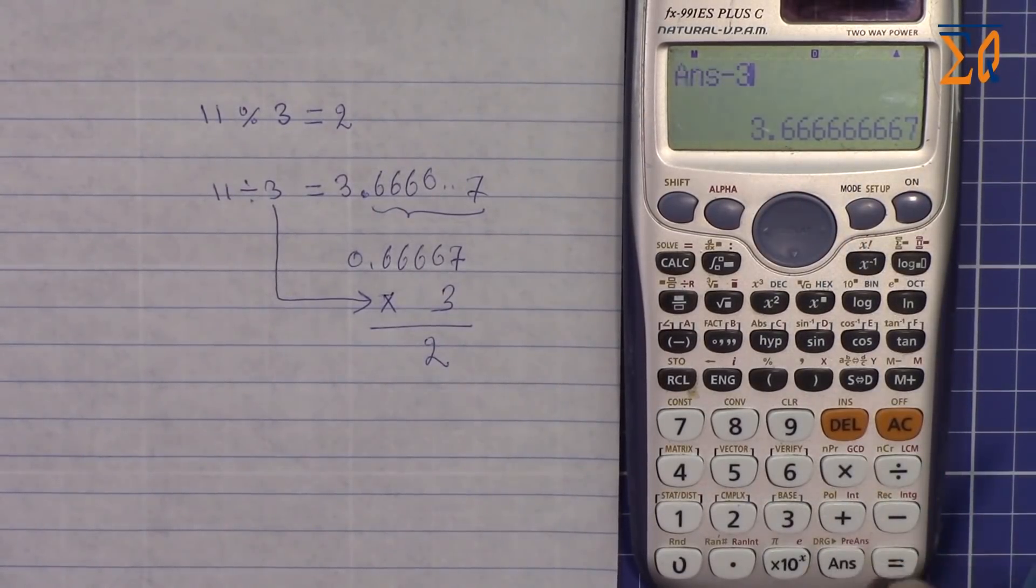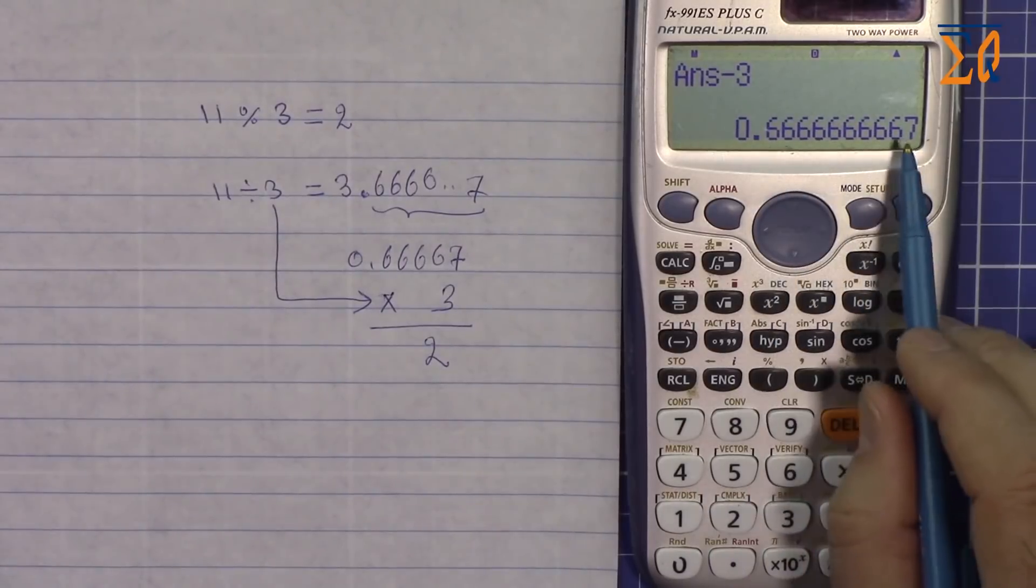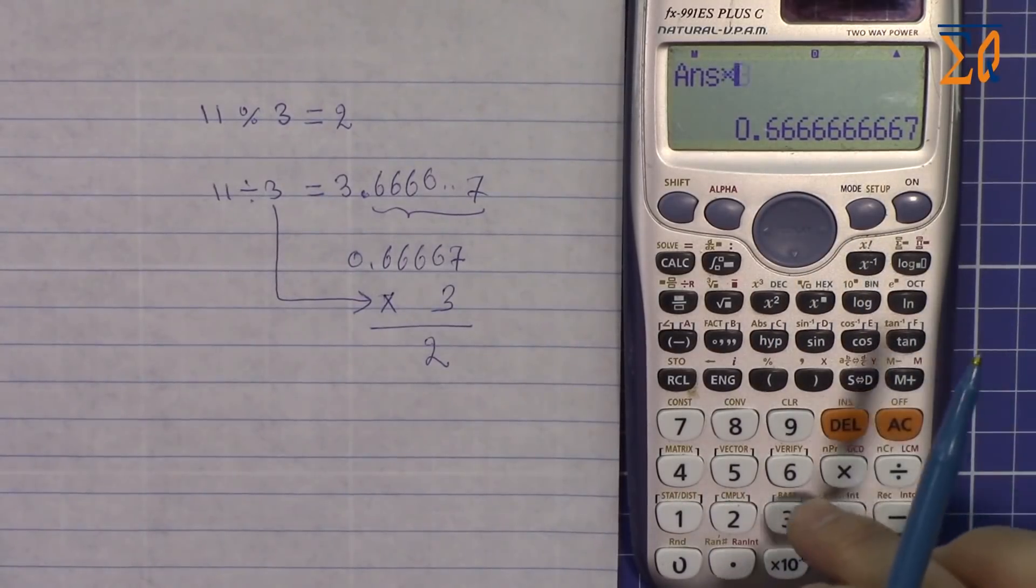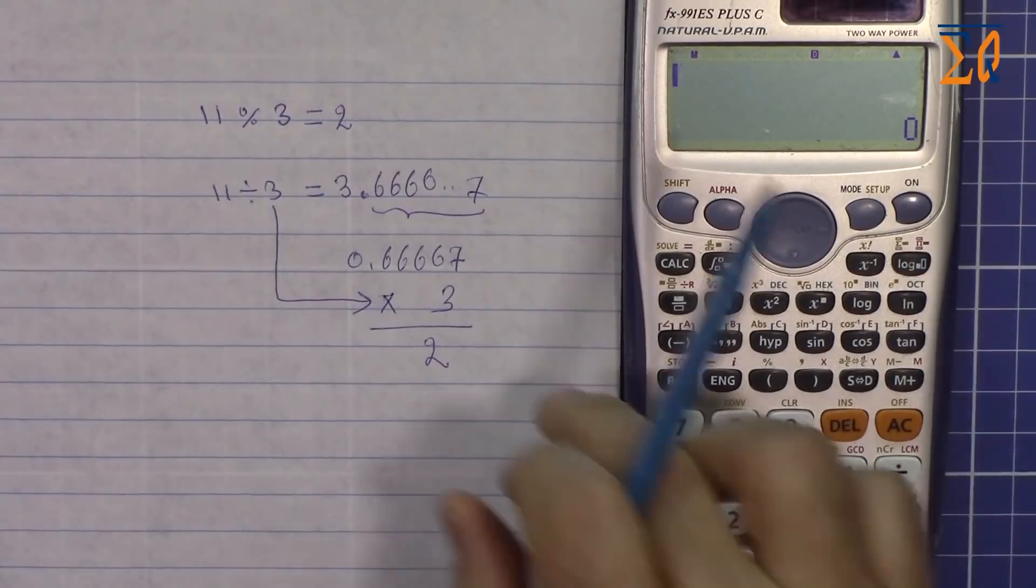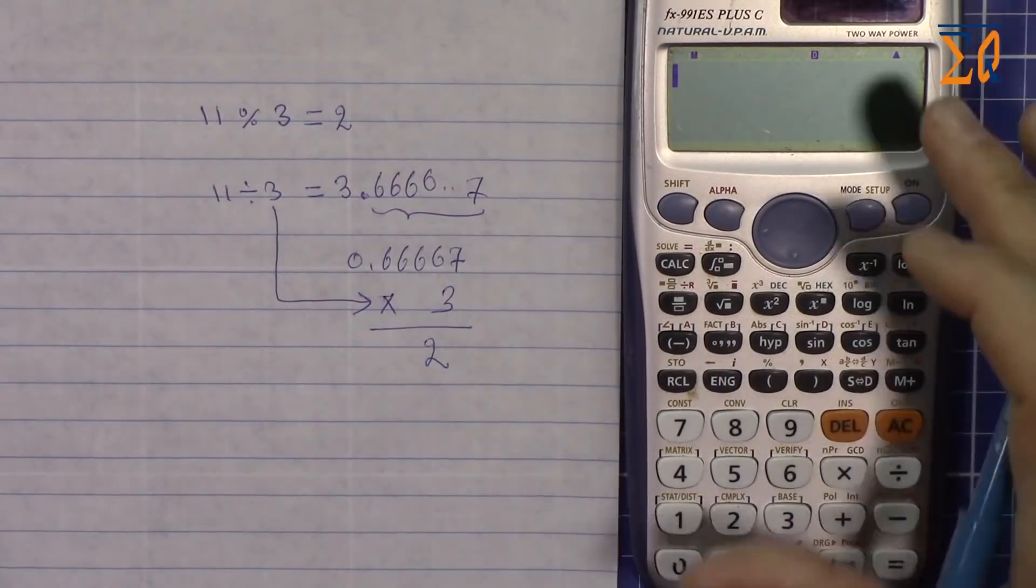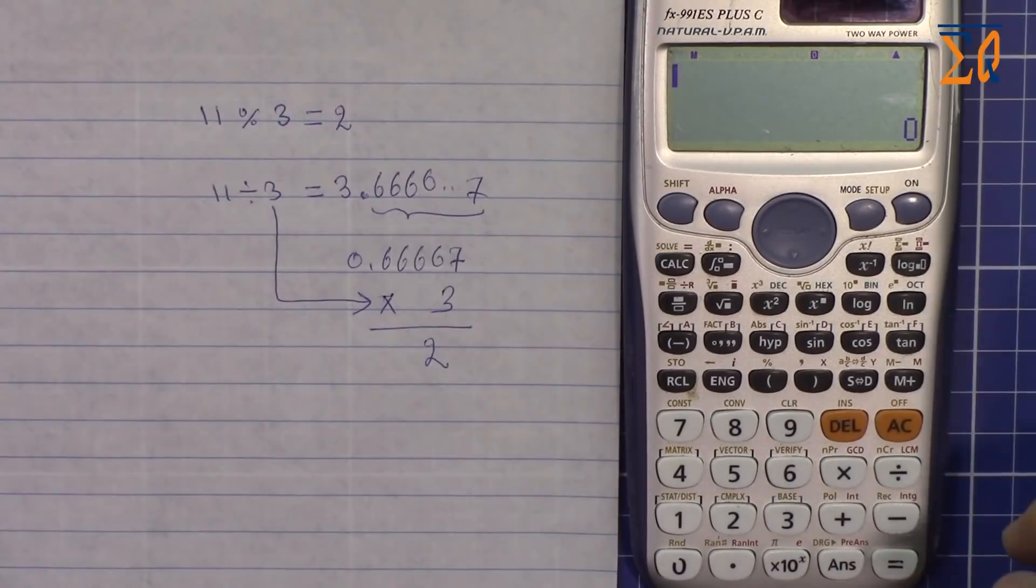We have this, multiply by 3, so the answer is 2. That is how you can find the modulus of a number using this calculator. If you like this video please thumb up and also please subscribe to my channel.